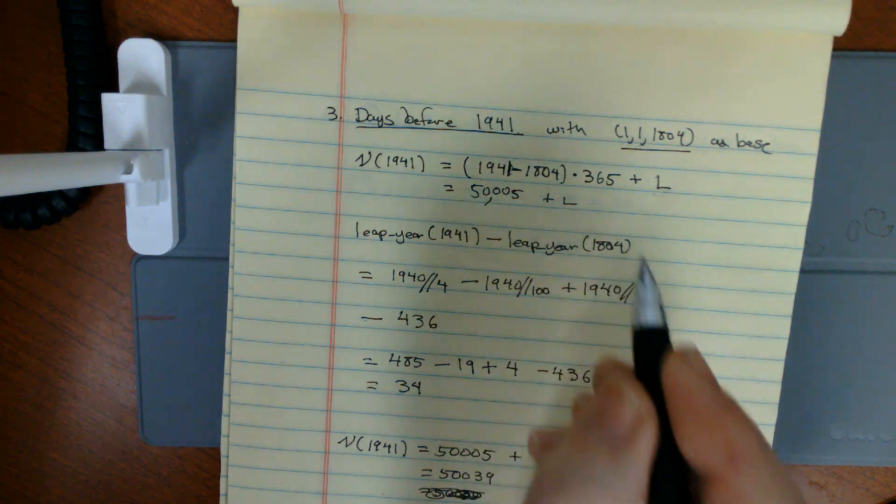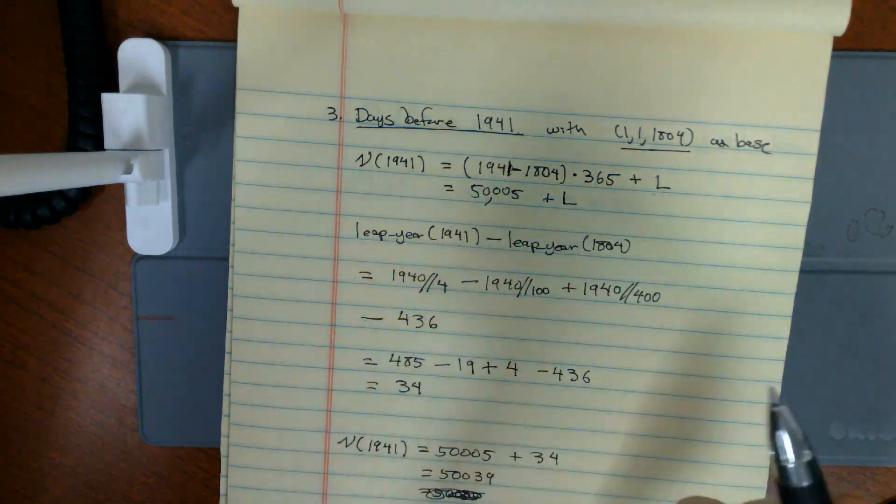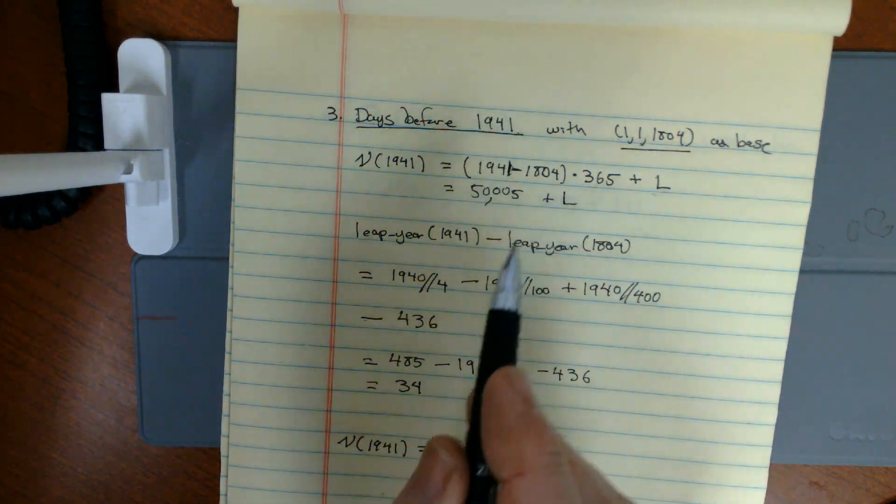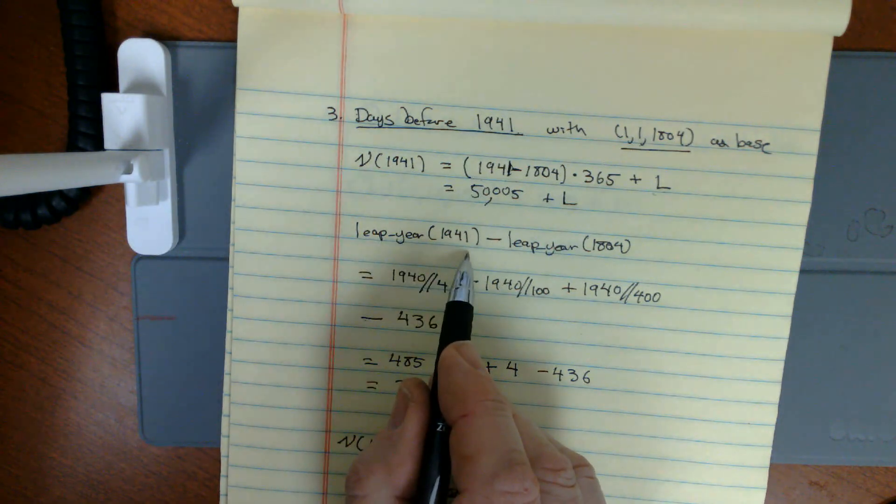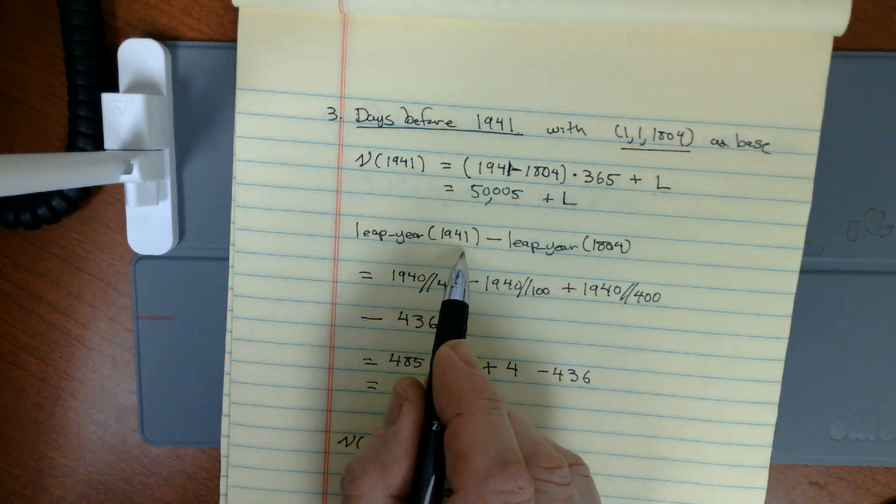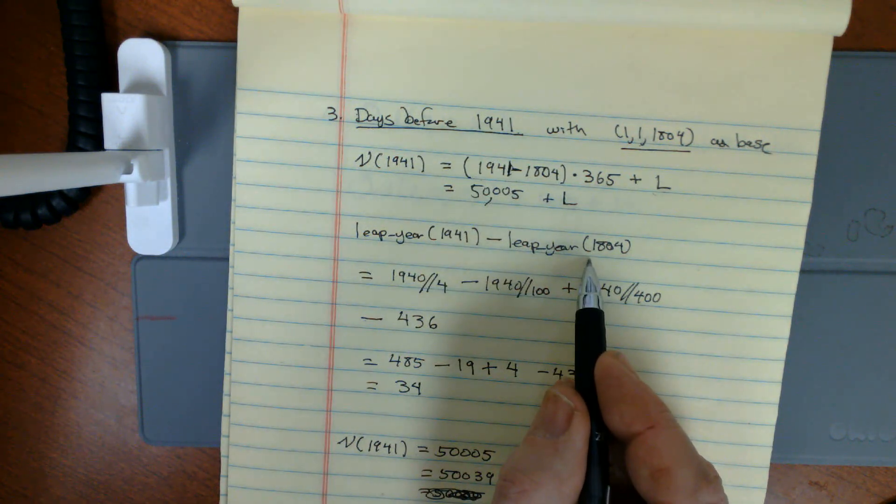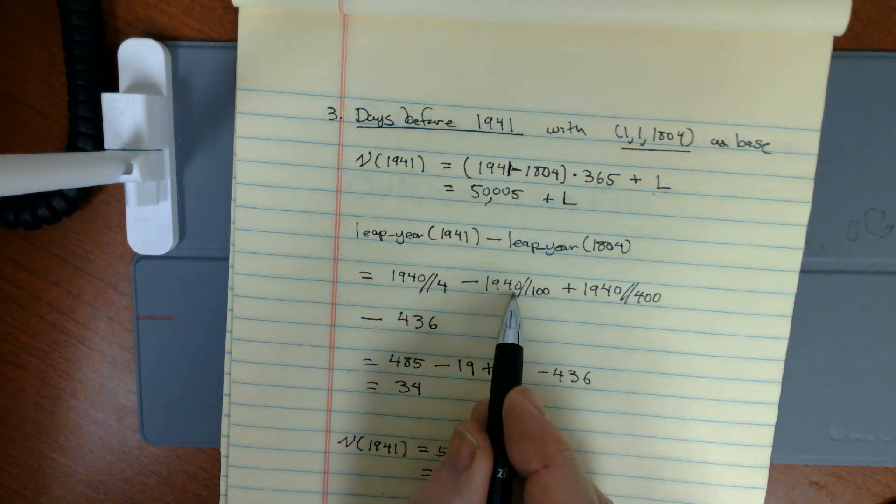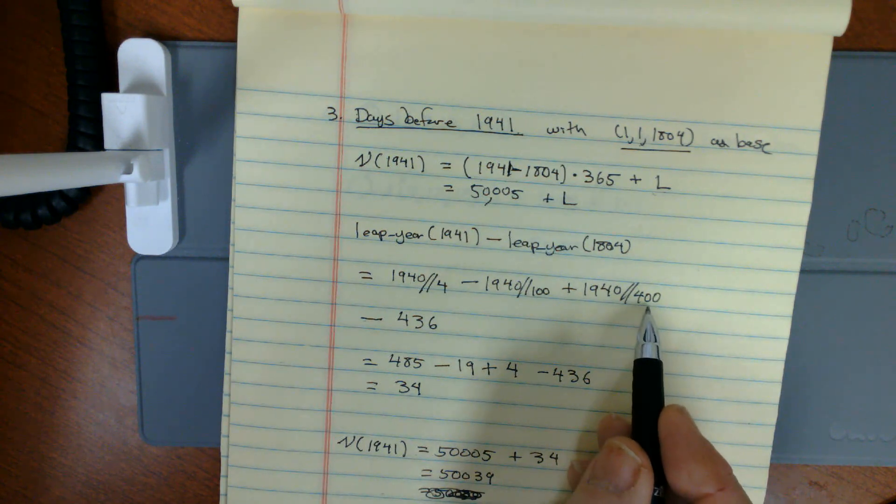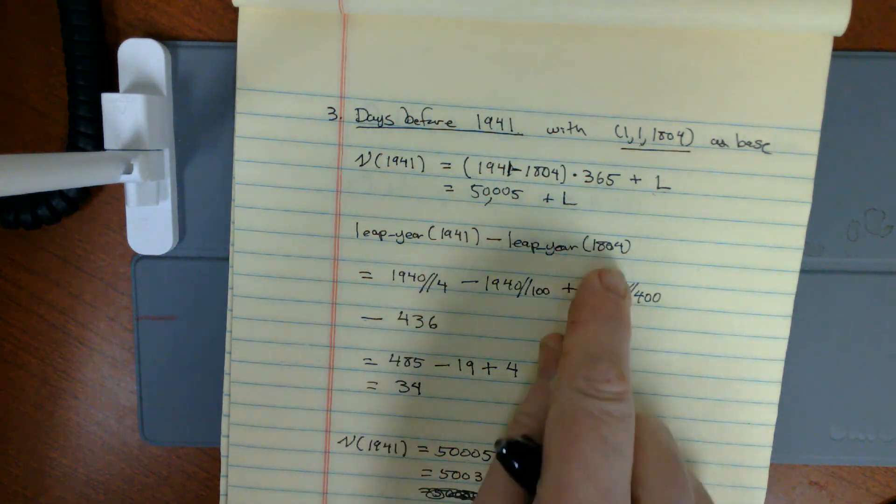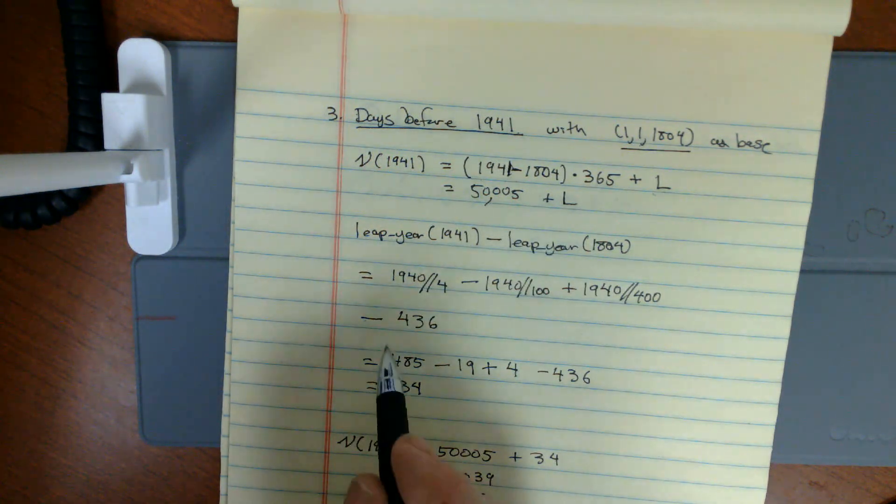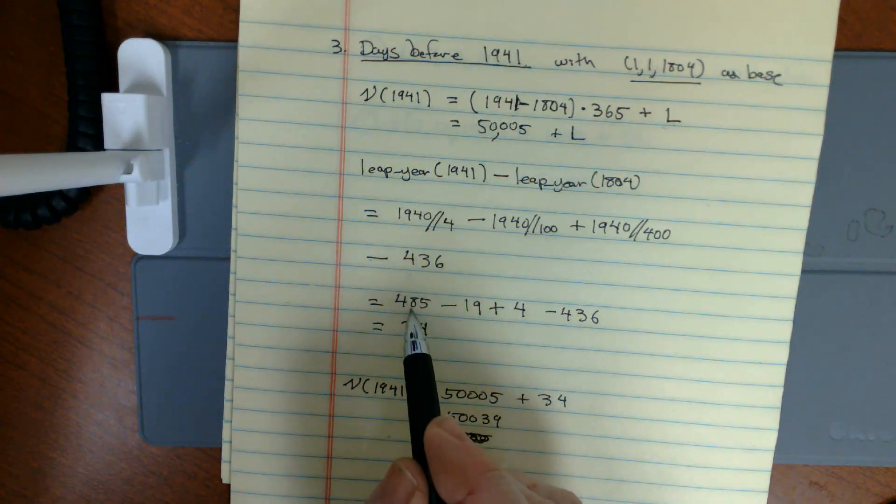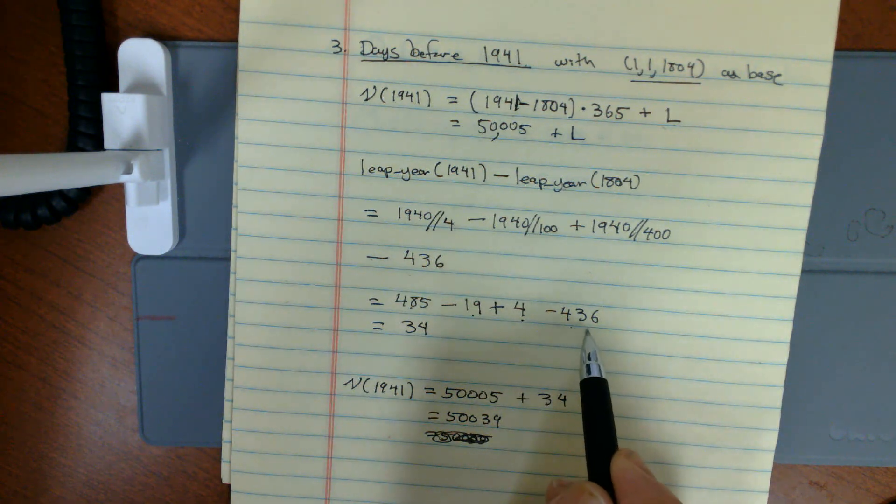I just need to find out how many leap days there are. Same as leap years between the base date and 1941. I'll count the number of leap years before 1941, and I will subtract from it the number of leap years before our base date. This is 1940 integer divided by 4, 1940 integer divided by 100, 1940 integer divided by 400 minus this number we calculated before. Anytime I use this as a base date, we'll be able to subtract that 436. I do my arithmetic here, get 485 minus 19 plus 4 minus 436.